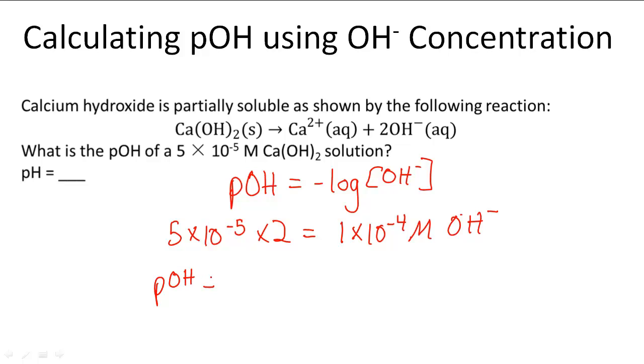To get the pOH, I take the negative log of the concentration of OH which is 1 times 10 to the negative 4th, and that equals a pOH of 4.0.